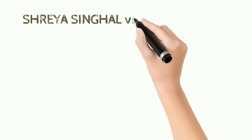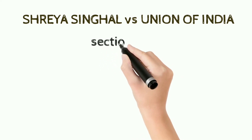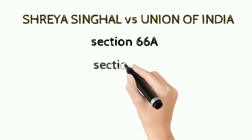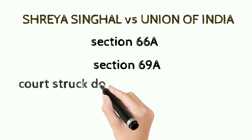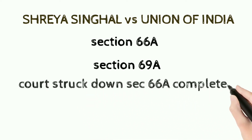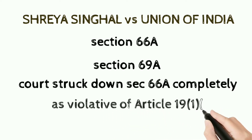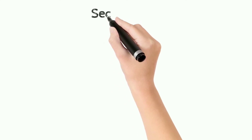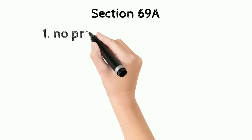Now we will discuss a very landmark judgment of the Supreme Court — that was Shreya Singhal v. Union of India. In this case, two provisions of the IT Act were challenged: one was Section 66A and the second was Section 69A. Section 66A was completely struck down by the Supreme Court on the grounds that it was violative of the fundamental rights under Article 19(1)(a) of the Indian Constitution, which provides for freedom of speech and expression. On the other hand, if we talk about Section 69A, we will first understand what were the main grounds of challenge against this section.